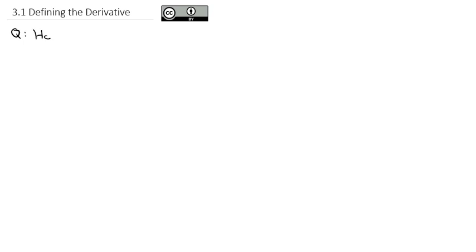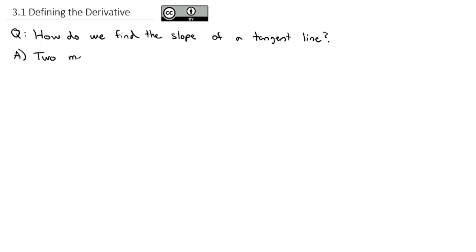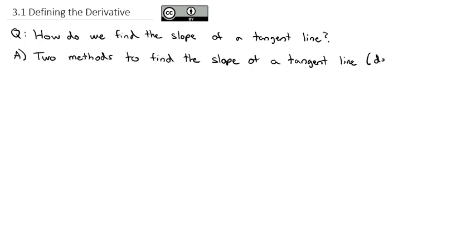The question we're going to answer is: how do we find the slope of a tangent line? To answer this question, when we want the slope of a tangent line through a specific point, there are two methods. Both work equally well — sometimes one is better than the other. By way of vocabulary, the slope of a tangent line is what is called in calculus the derivative — the rate of change instantaneously at that point.